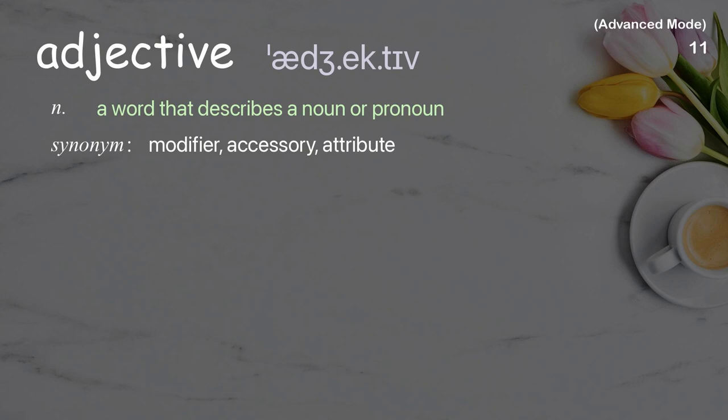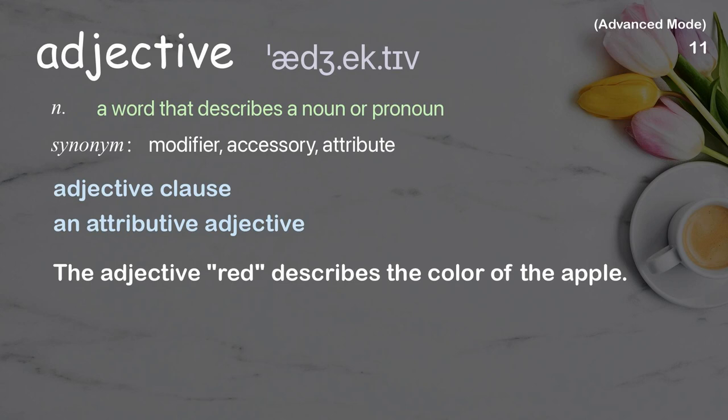Adjective: a word that describes a noun or pronoun. Examples: adjective clause, an attributive adjective. The adjective 'red' describes the color of the apple.